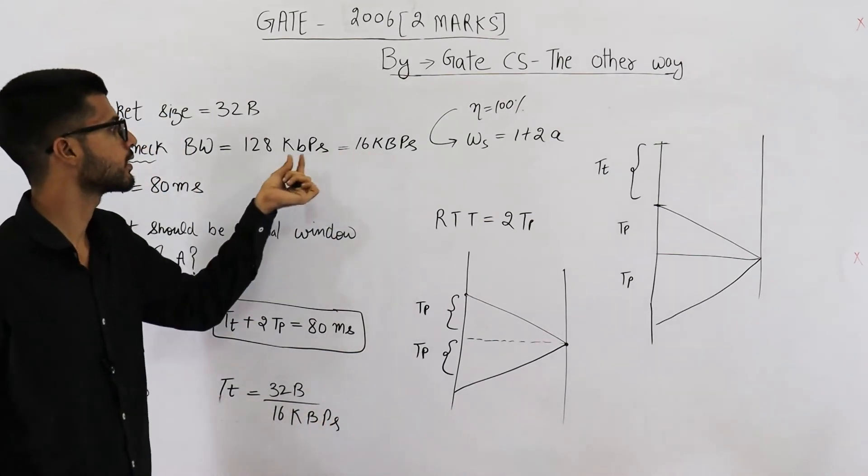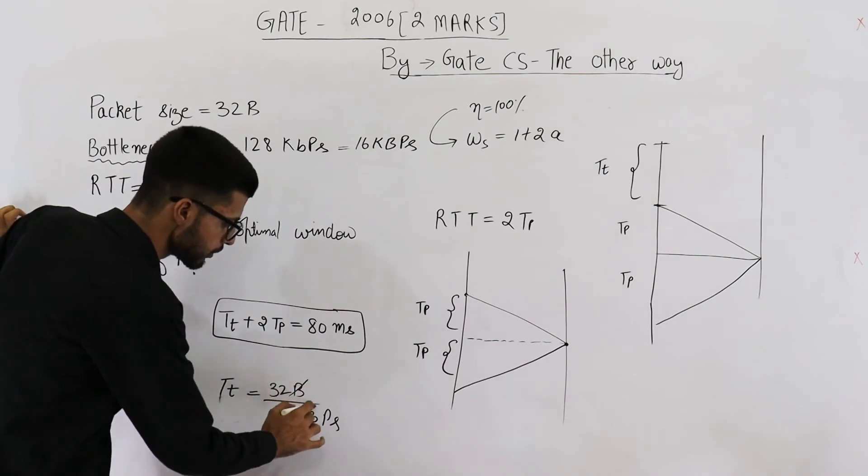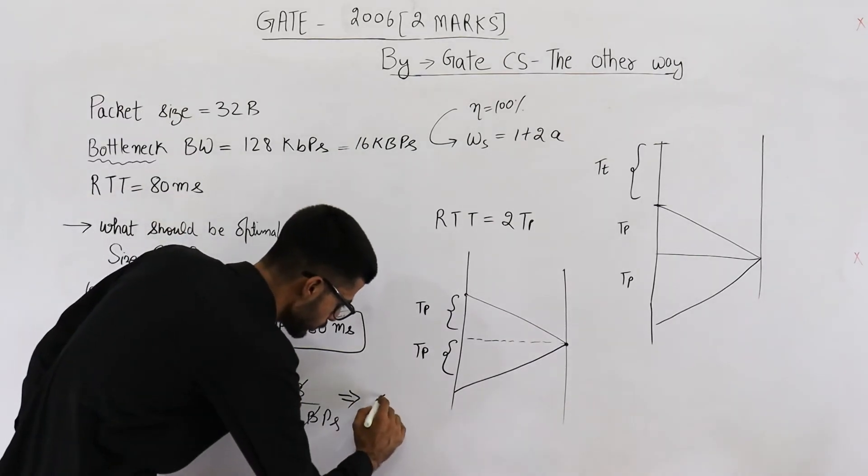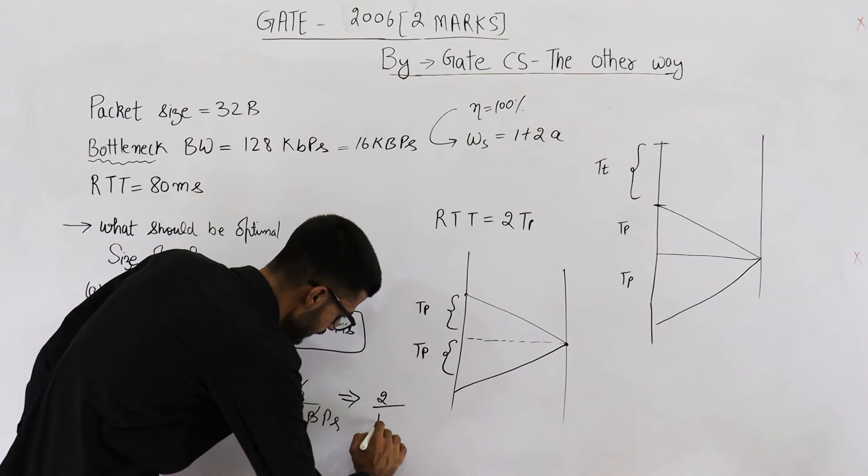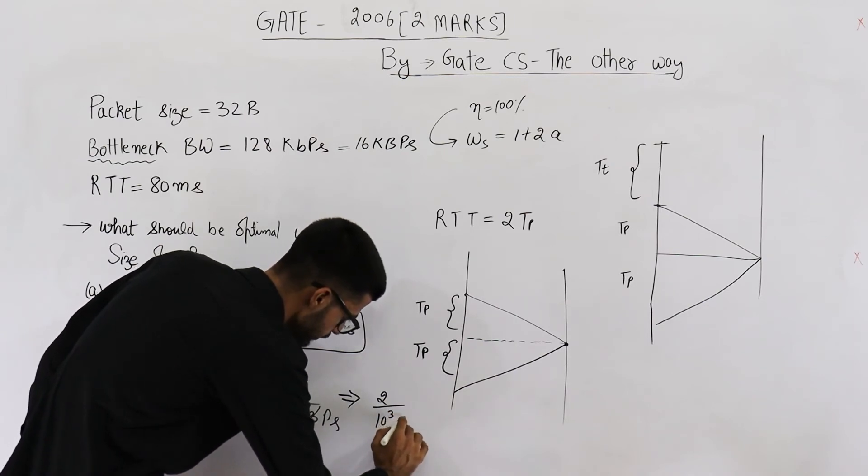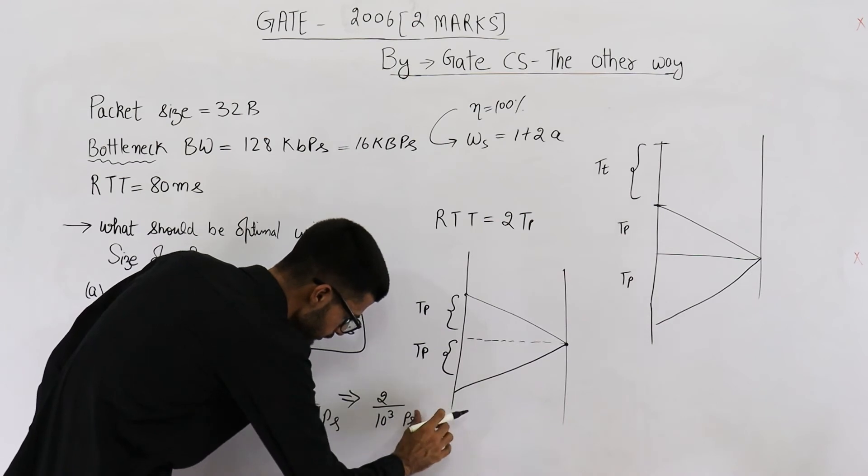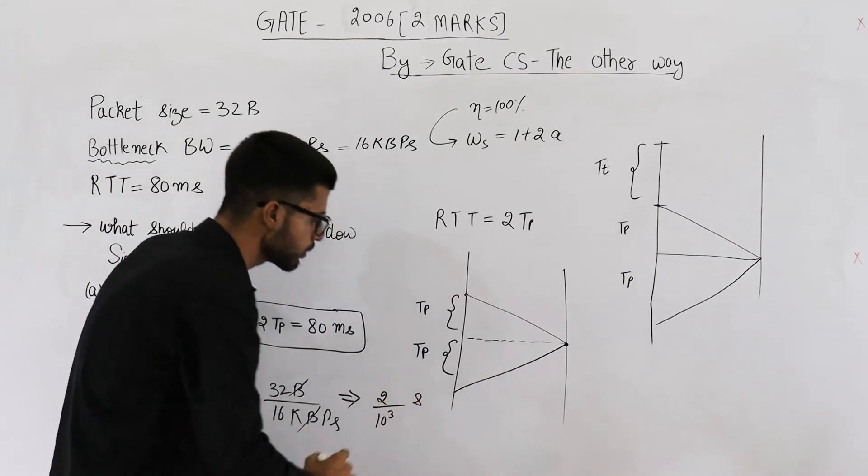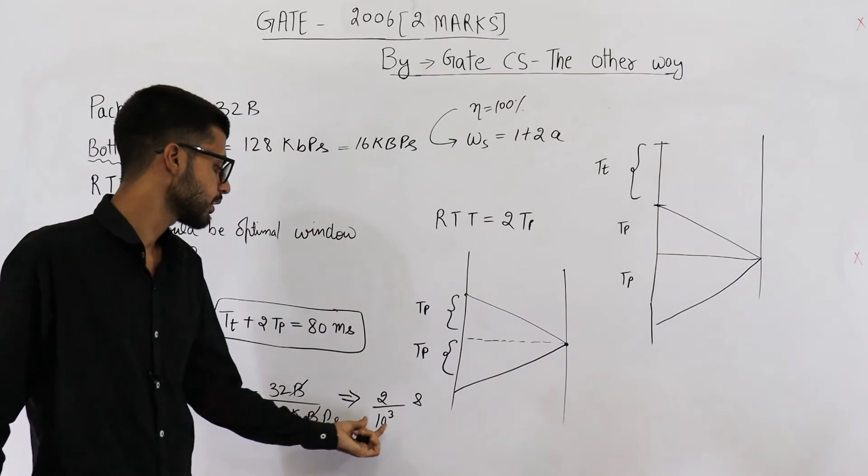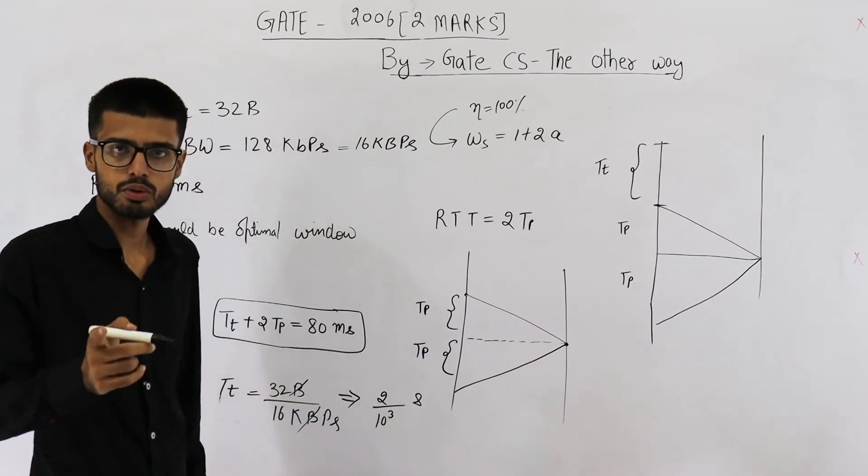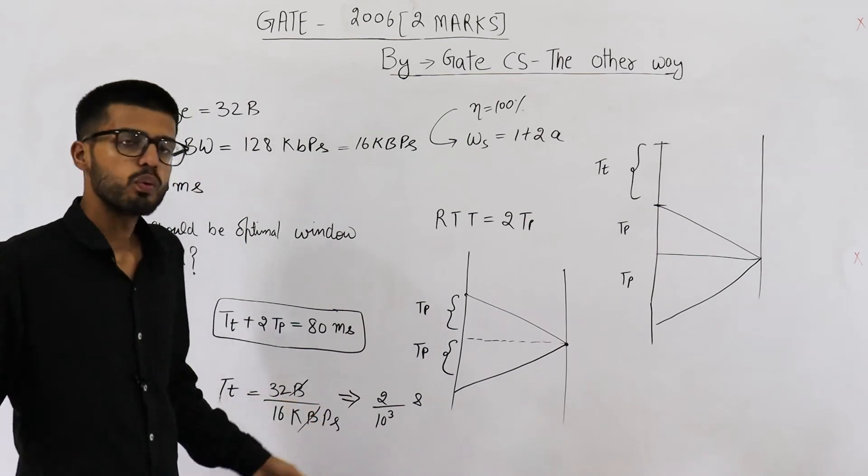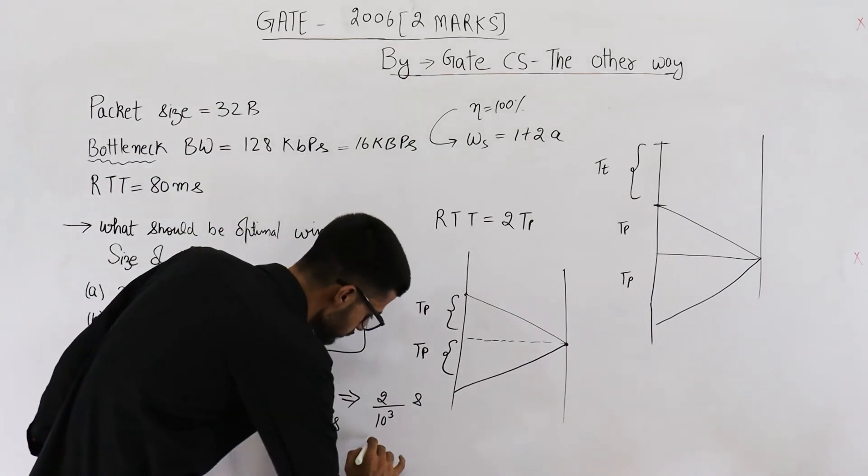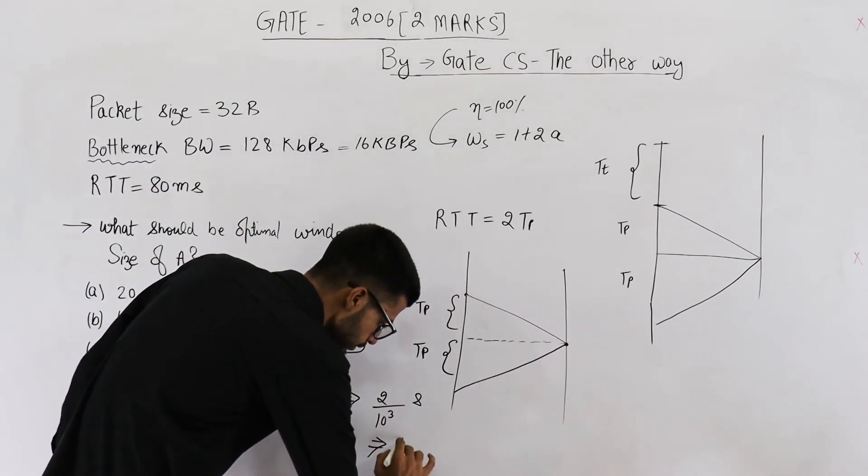See why did I convert this small b into capital B? Because I want to make this unit same. So both of these bytes can be cancelled. Now you can see we are left with 2 divided by 10 raised to the power 3 per second. Per second will become second. So this per second when it goes to numerator it will become second. Now the value of k must be taken as 10 cubed. It is not 2 raised to the power 10 because this is bandwidth. Whenever we are talking in terms of bandwidth, k is 10 raised to the power 3. So this comes out to be 2 milliseconds.